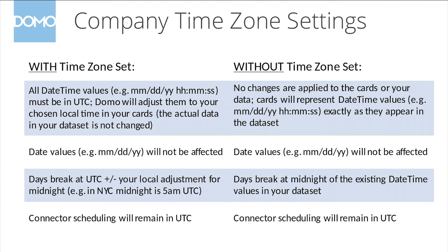It's important to know that the actual data in your dataset won't be changed. Domo is simply rolling forward or backward the timezones at the time of visualization. This also only applies to date time values, so date values that are stored without timestamps aren't affected.